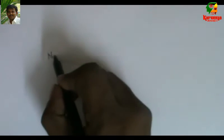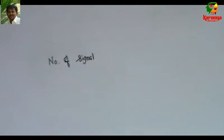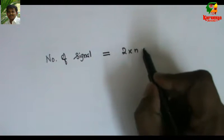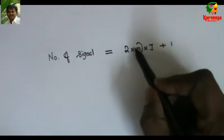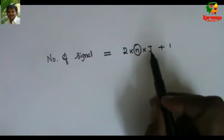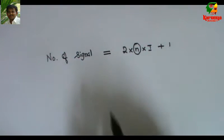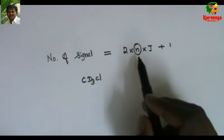First, let us try to predict how many signals we will get for CD3Cl. To predict the number of signals or multiplicity, the formula we use is 2NI plus 1, where N is the number of hydrogen or deuterium. In the case of CD3Cl, N is 3.